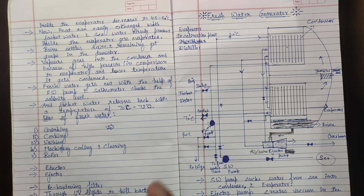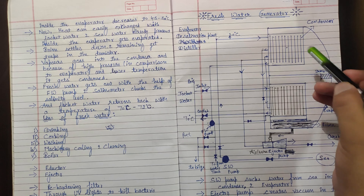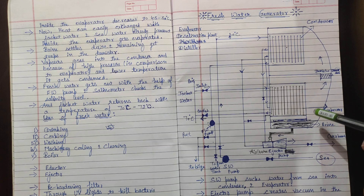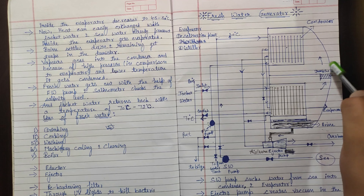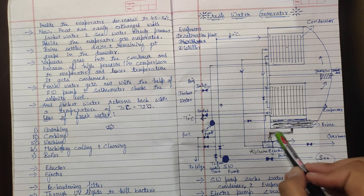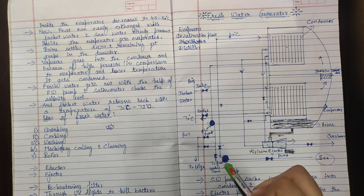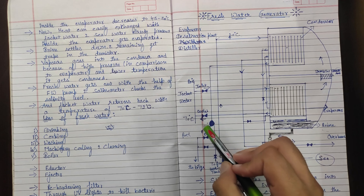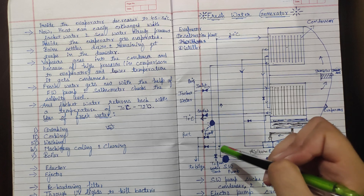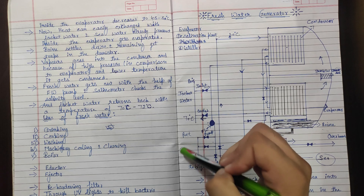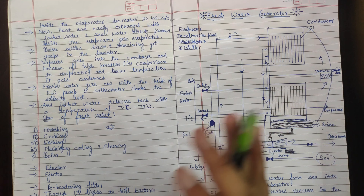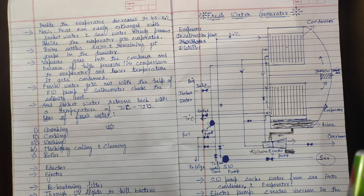The parts of a fresh water generator: the first part is the condenser, the second part is the evaporator, the third part is the demister, the fourth is the air brine ejector. There is also the sea water pump, the fresh water pump, jacket water inlet and outlet, and a device called the salinometer. These are the main parts of a fresh water generator.